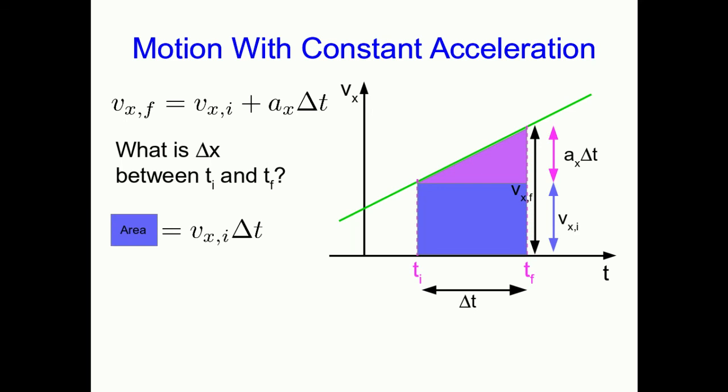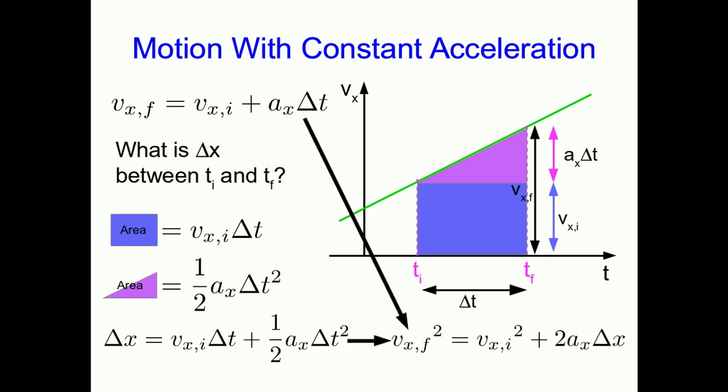So now we can start putting together these areas. The area of the rectangle is just going to be its height times its width, so vxi times delta t. And the area of the triangle is a half times its height times its width, and so a half ax delta t times delta t, which we can simplify. And so our total displacement, or x component of displacement, is just the sum of those two things. And there's our new equation.